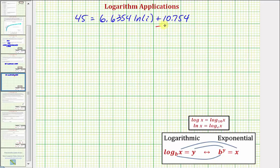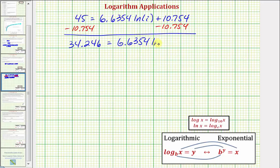We'll first subtract 10.754 from both sides of the equation. So we'll have 34.246 equals 6.6354 times natural log I.